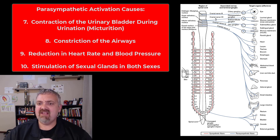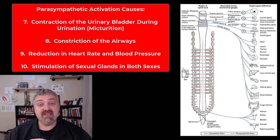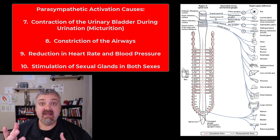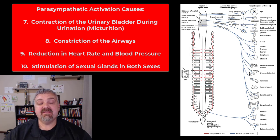Number ten, sexual arousal and the stimulation of all the sexual glands involved with lubricating the reproductive systems are going to be under parasympathetic control. So those are the key functions of the parasympathetic nervous system. I hope this helps. Have a wonderful day.